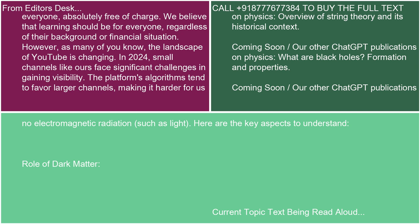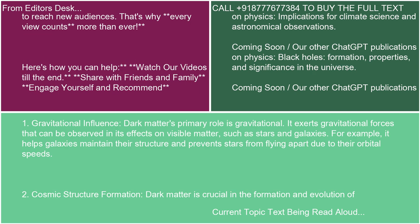Here are the key aspects to understand the role of dark matter. One: gravitational influence. Dark matter's primary role is gravitational. It exerts gravitational forces that can be observed in its effects on visible matter, such as stars and galaxies. For example, it helps galaxies maintain their structure and prevents stars from flying apart due to their orbital speeds.